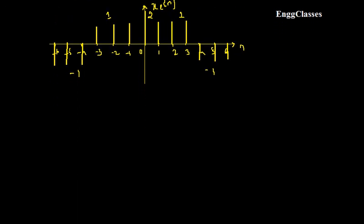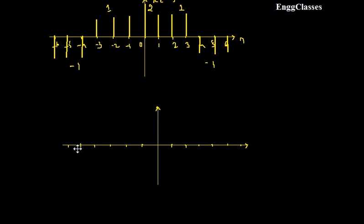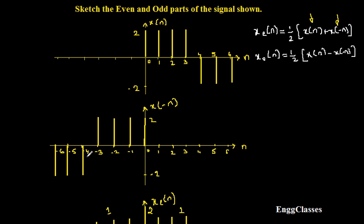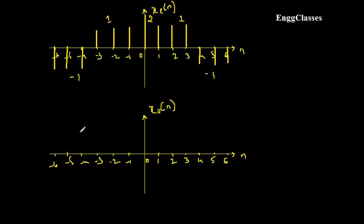The next task is to sketch the odd part. I set up x and y axes and call this x_o(n). Again I start from the extreme left. At minus 6, x(n) is 0 and x(-n) is minus 2 — 0 minus (minus 2) gives plus 2, divided by 2 gives 1. At minus 5, same calculation gives plus 2, divided by 2 gives 1. At minus 4 as well — so at positions minus 6, minus 5, and minus 4, the odd part has amplitude 1.